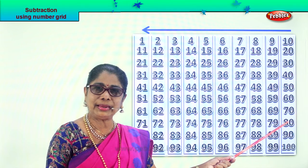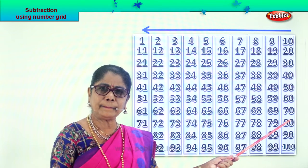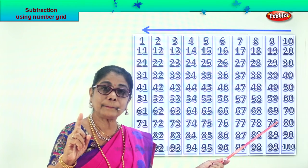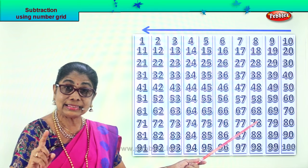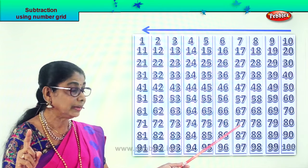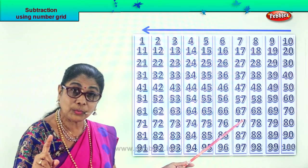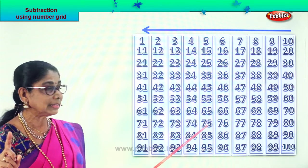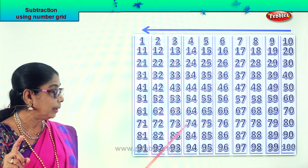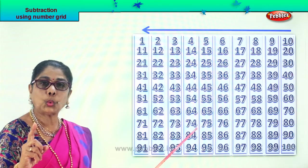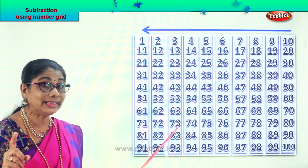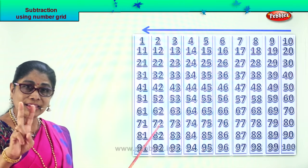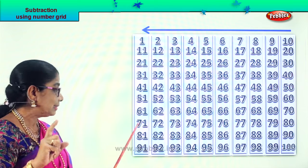Every time you minus 1, let's see — 80. 80 take away 1 — 79. 79 take away 1 — 78. 77 take away 1 — 76. 76 take away 1 — 75. 75 take away 1 — seventy-four. Seventy-four take away one — seventy-three. Seventy-three take away one — seventy-two. Seventy-two take away one — seventy-one. Good.